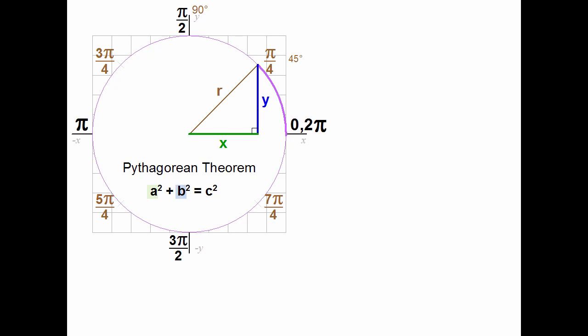a and b are the short sides of the triangle. c is the long side, which is also called the hypotenuse. Changing the variable names to our example, a and b, the short sides, are x and y. c, the hypotenuse, is our radius, r. For a circle, we can write the Pythagorean Theorem as x squared plus y squared equals r squared.